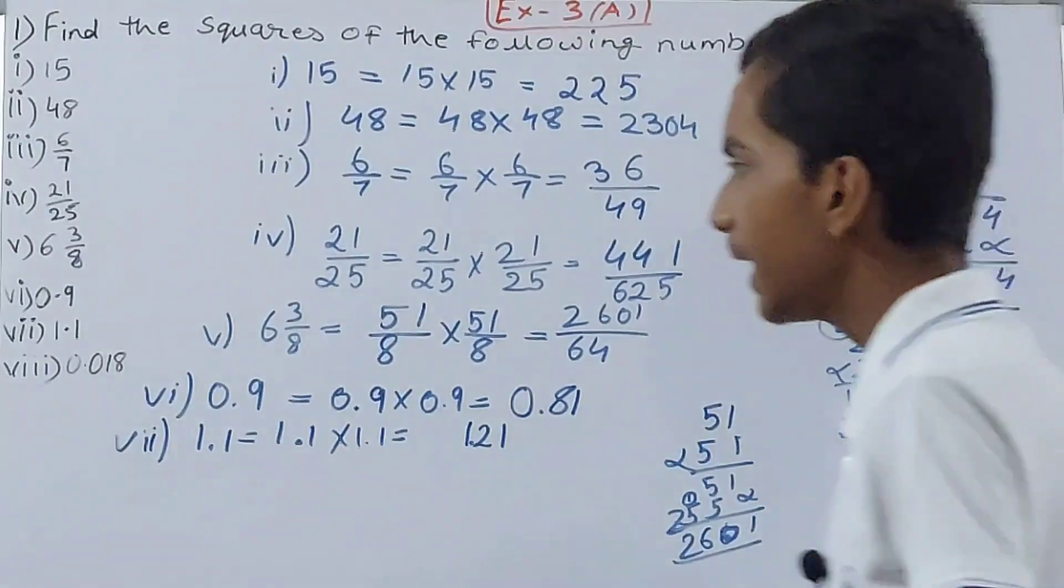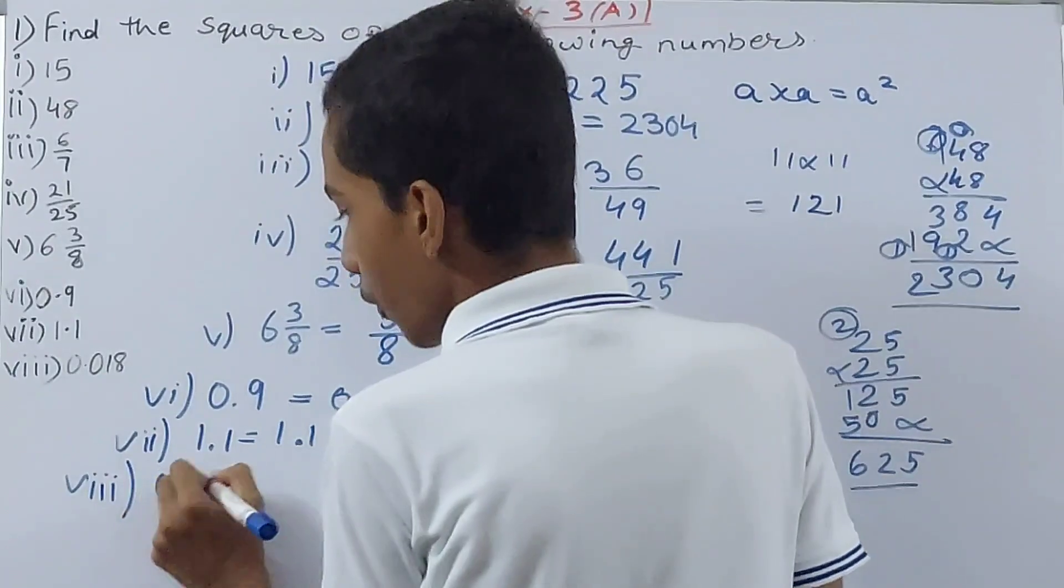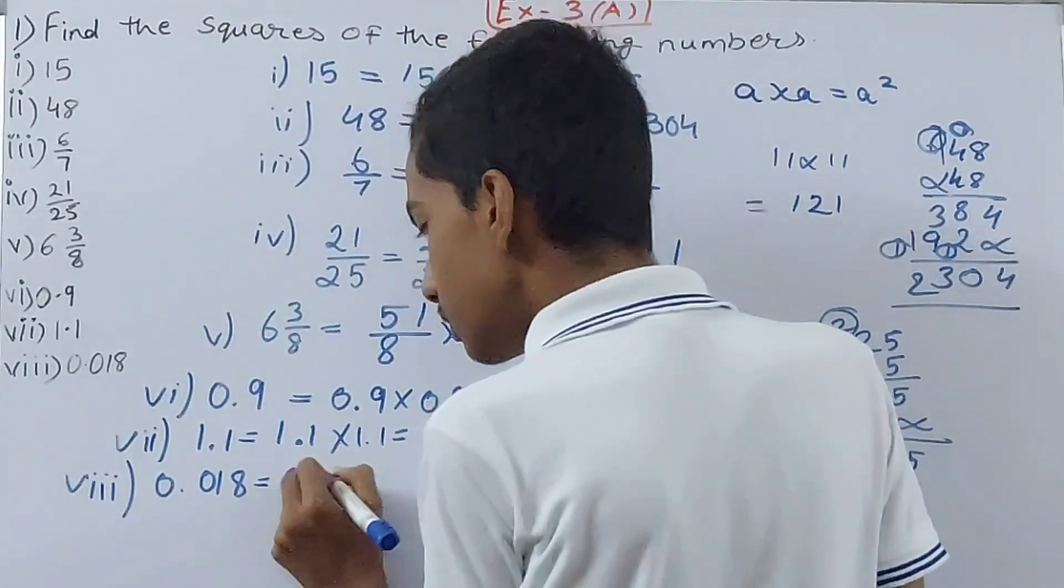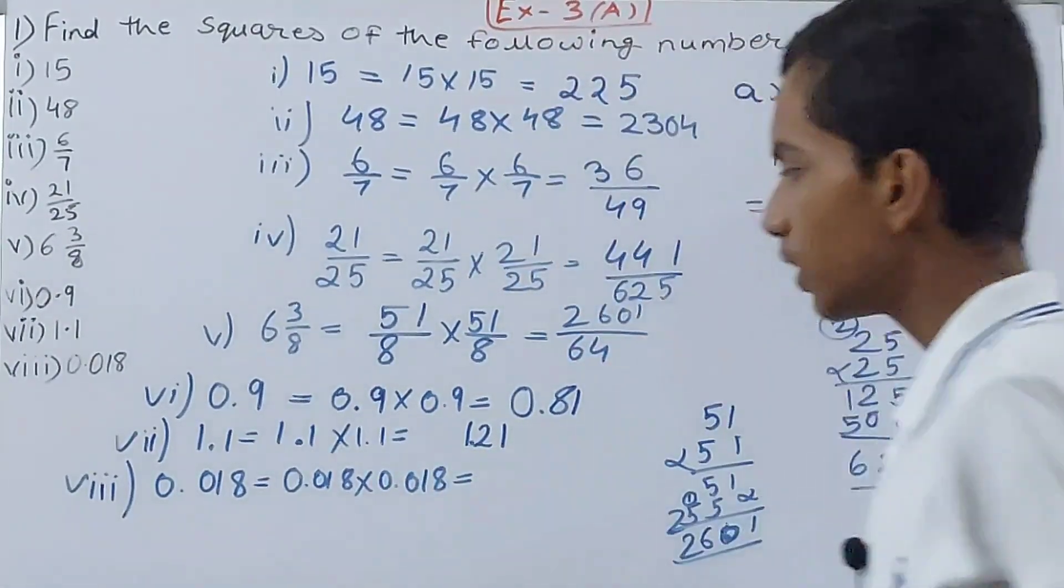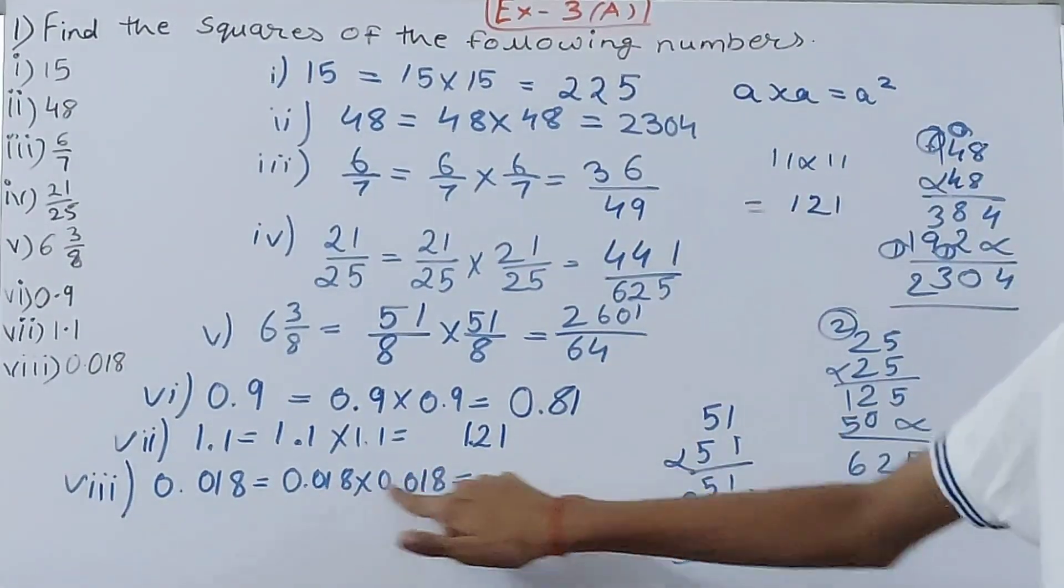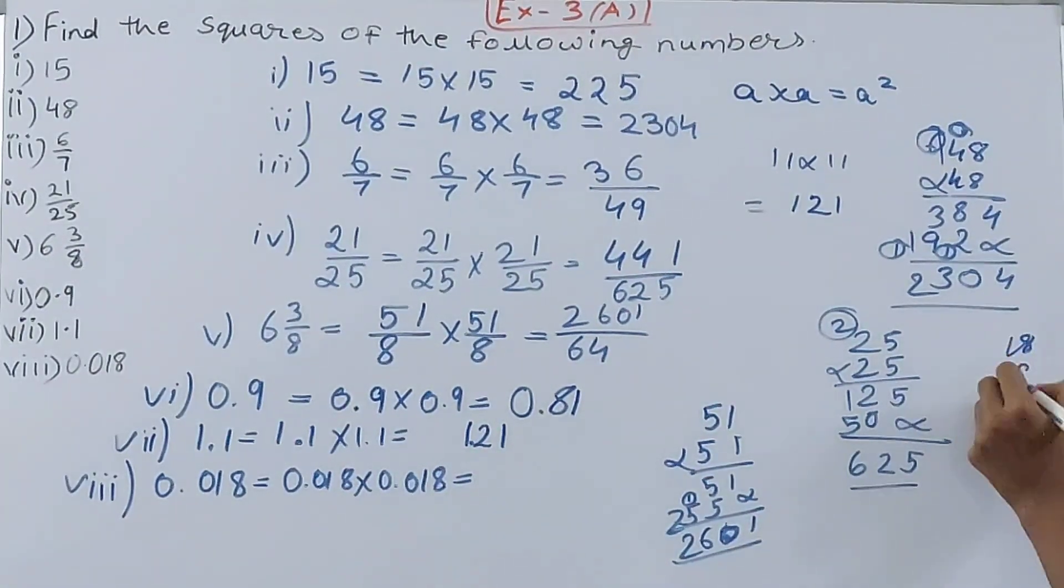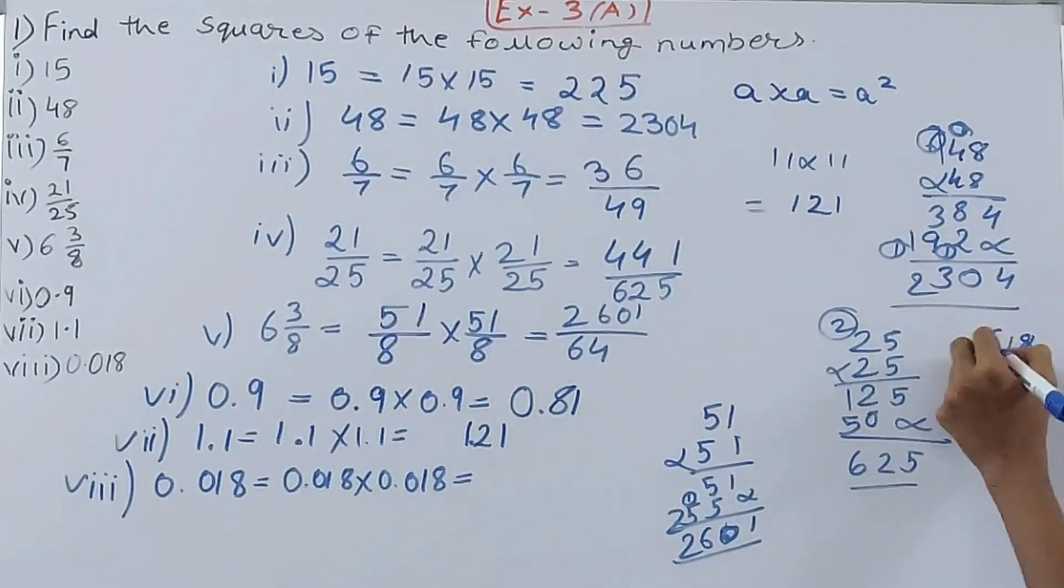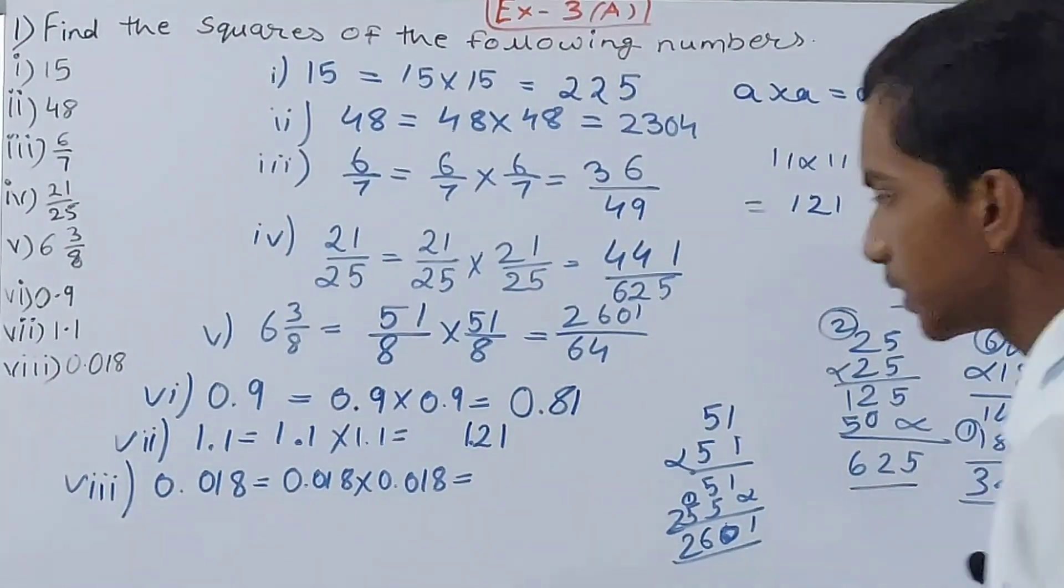Next we have the eighth part: 0.018 into 0.018. That is what? 18 square only we have to do, right? So what is the square of 18? Let's quickly do that. 8 into 8 is 64, so 4 and 6. 8 into 1 is 8 plus 6 is 14, so 4 and 1. 1 into 8 is 8 plus 1 is 9, 1 into 1 is 1. So 324.